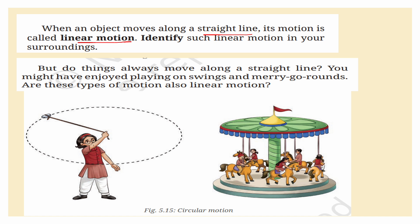But do things always move along a straight line? No. You might have enjoyed playing on swings and merry-go-rounds. Are these types of motion also linear motion? Now we will see circular motion. See this merry-go-round — this is an example of circular motion.